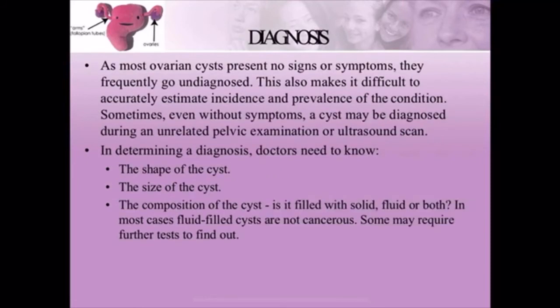Regarding diagnosis, ovarian cysts frequently present with no signs and symptoms, so they often go undiagnosed. This makes it difficult to accurately estimate the incidence and prevalence of the condition. Sometimes, even without symptoms, a cyst may be diagnosed during an unrelated pelvic examination or ultrasound scan. In determining a diagnosis, the doctor needs to know the shape, size, and composition of the cyst — whether it is filled with solid material, fluid, or a liquid gel.